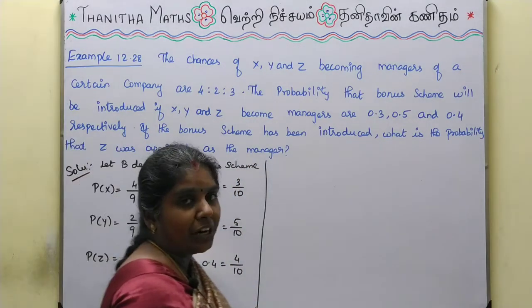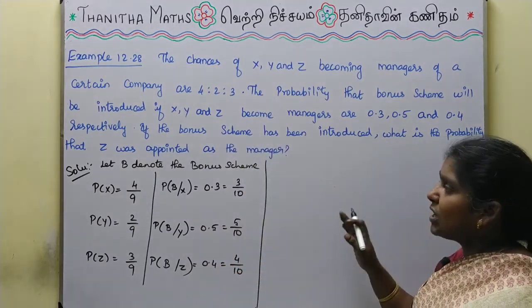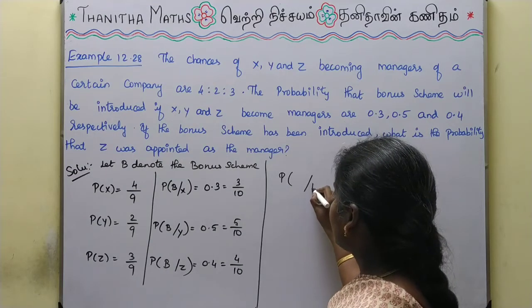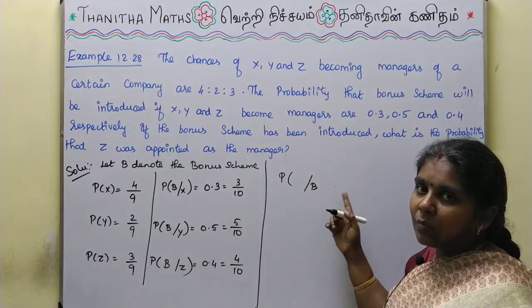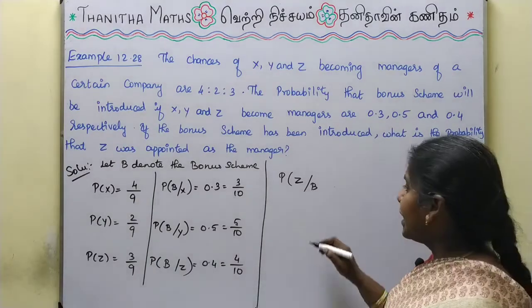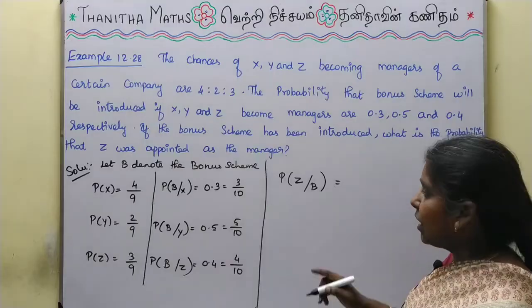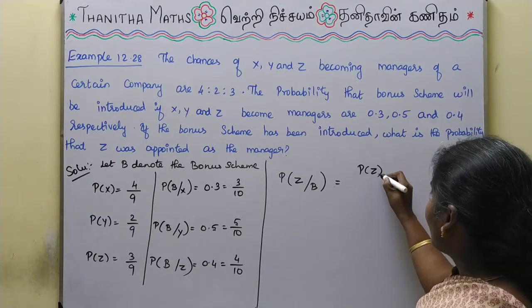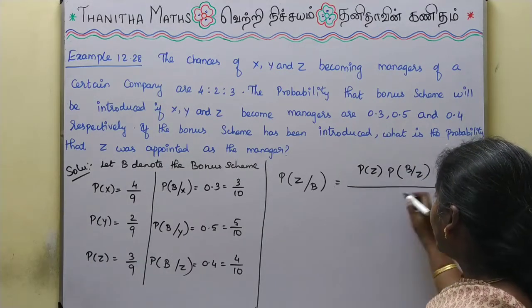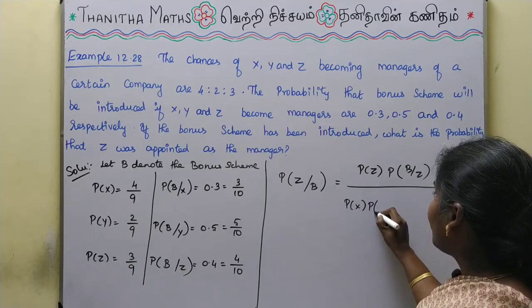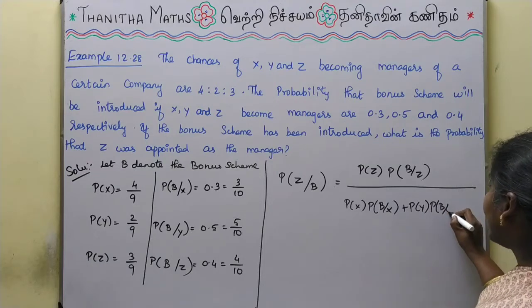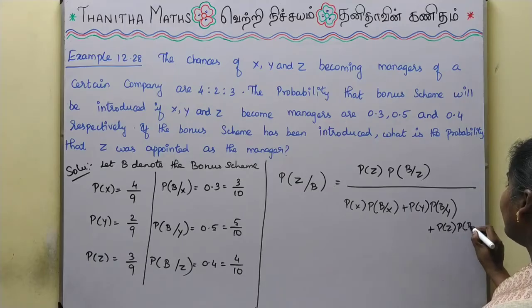If the bonus scheme has been introduced, what is the probability that Z was appointed as manager? We apply Bayes' theorem: P of Z given B equals P of Z multiplied by P of B given Z, the whole divided by P of X into P of B given X, plus P of Y into P of B given Y, plus P of Z into P of B given Z.